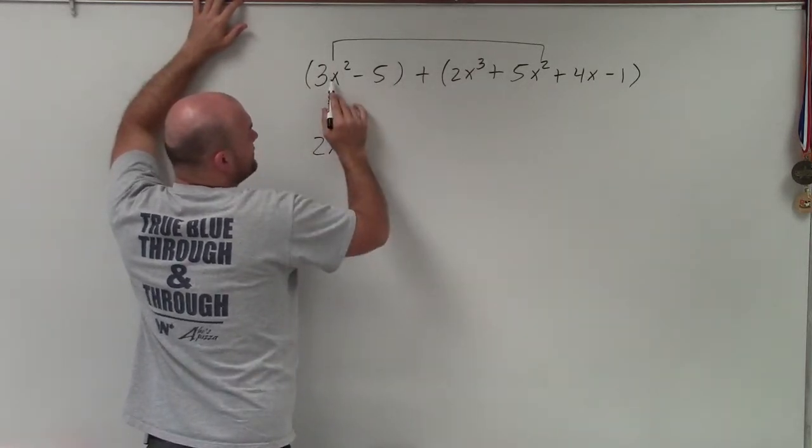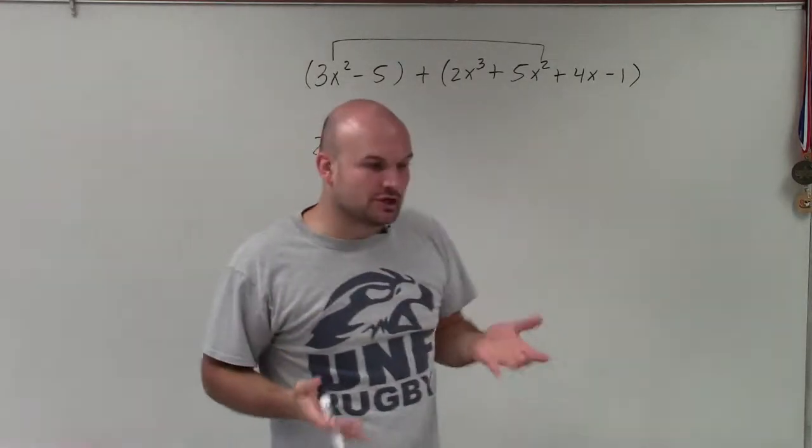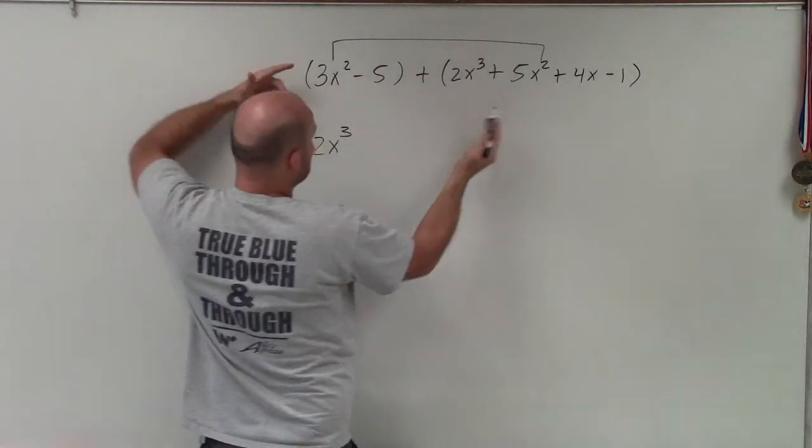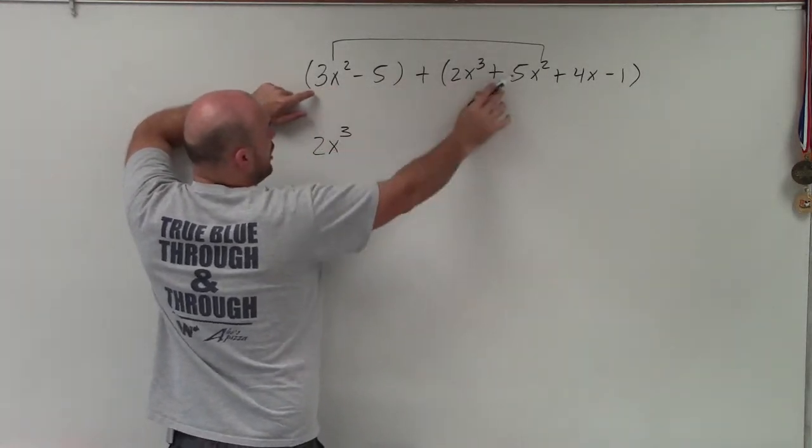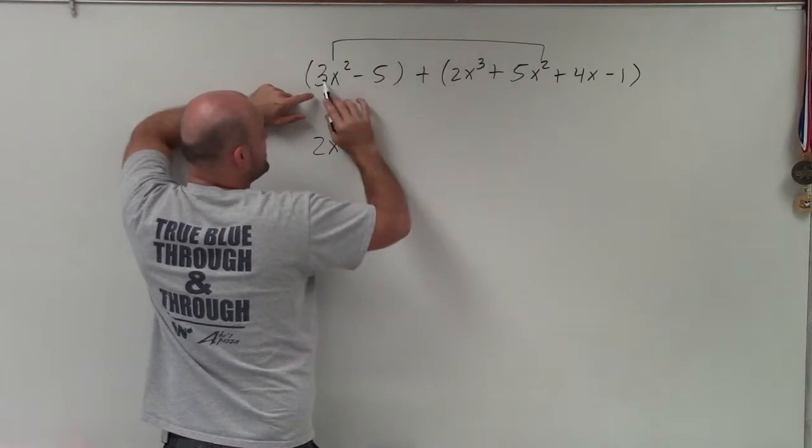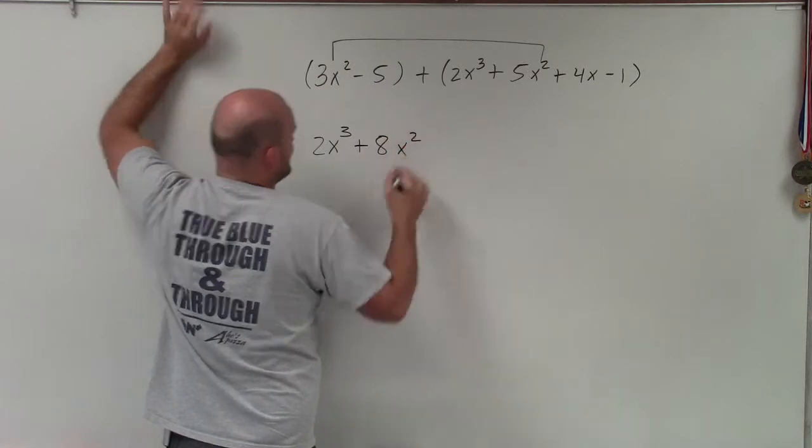Now, here, you can see I combine these. So I have 3x squared plus 5x squared. And when you're combining like terms, the term is going to remain the same. Basically, we're adding and subtracting. We're just adding our coefficients. 3 plus 5 is going to be equal to 8x squared.